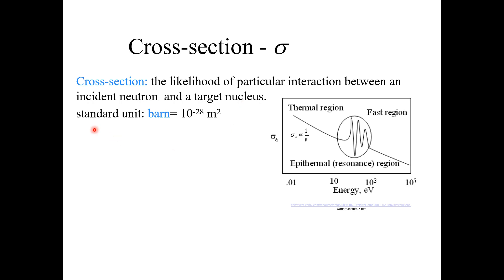The standard unit for the cross-section is the barn, and one barn is equal to 10 raised to the power minus 28 meters squared. This is the standard definition for the cross-section unit.